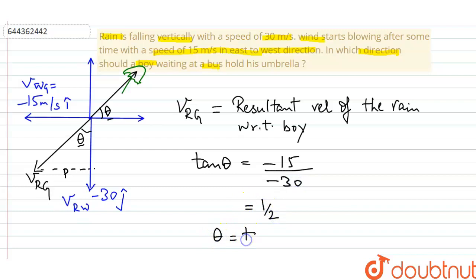Now theta is equals to tan inverse of half. So students, a boy should hold his umbrella inclined at this angle with the vertical towards east.